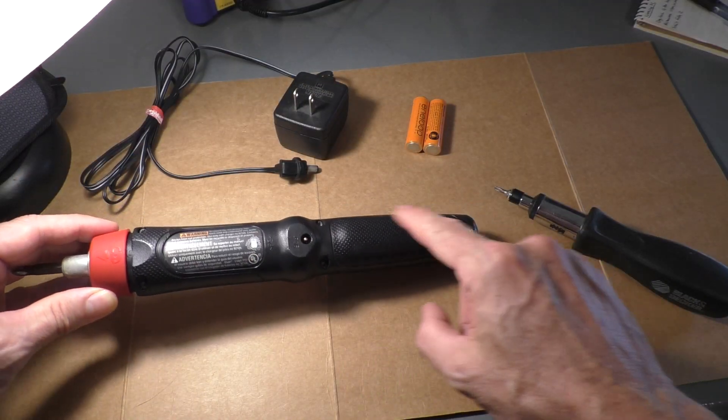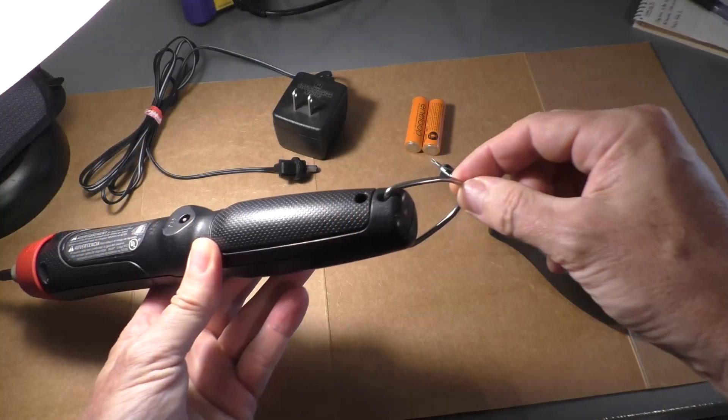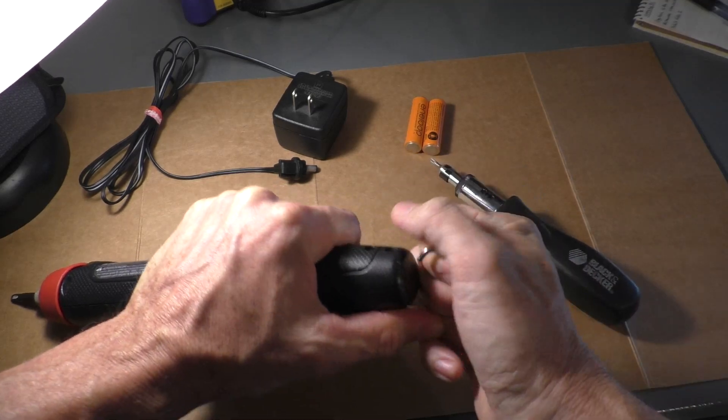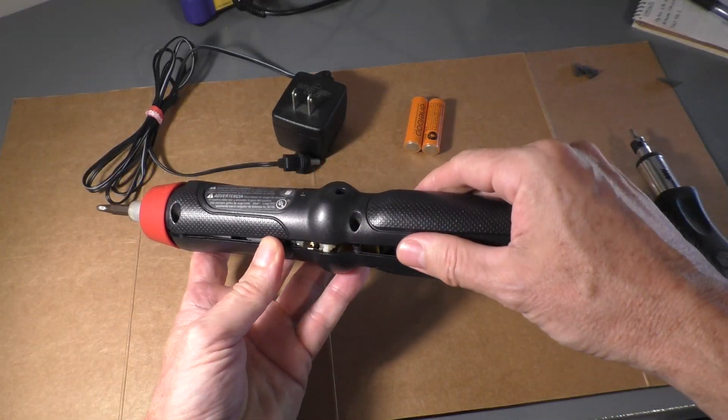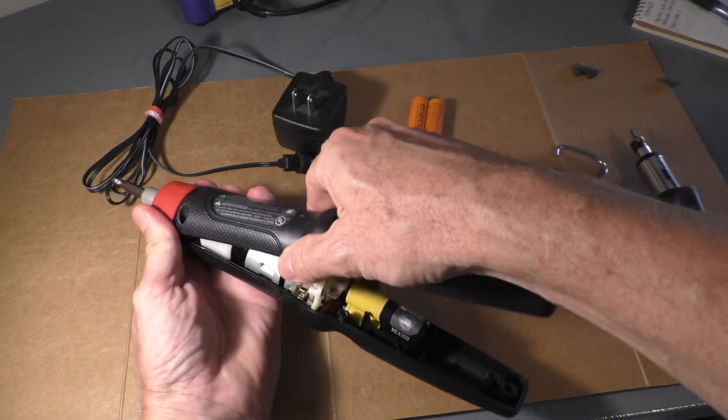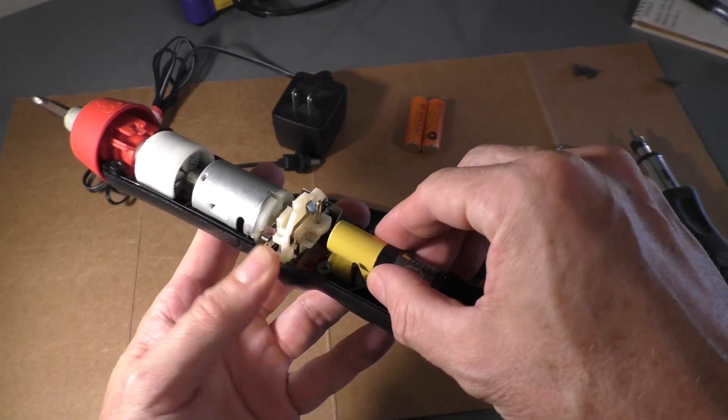So I remove five screws and then also this hanging ring and that separates the two halves. And this is the battery pack.